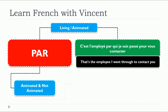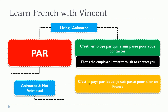Second category: animated and not animated, but not living. C'est le pays par lequel je suis passé pour aller en France. So le pays is a masculine singular word. We put the preposition PAR, then we put the pronoun in the masculine singular form: lequel. C'est le pays par lequel je suis passé pour aller en France.